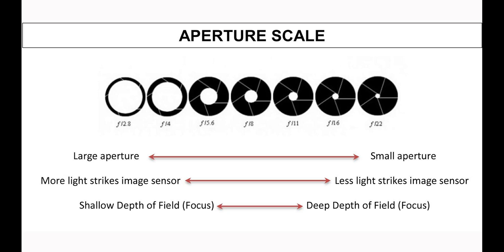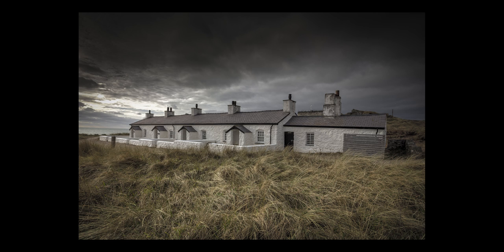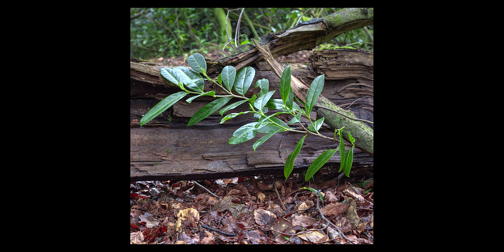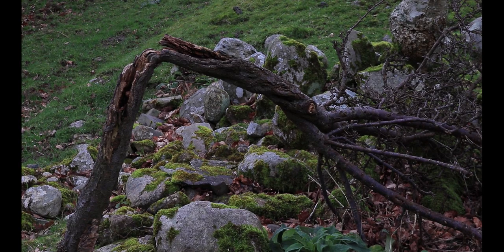F-stops determine how open the aperture is for allowing light through. The smaller the f-stop, like f1.4, means the aperture is at its widest, allowing all the light through the lens. So if we go through all the f-stops up to f22, the aperture becomes very small, like a pinhole. So you need to remember: large apertures mean small f-stop sizes. By changing the f-stop, the aperture has a direct impact on the depth of field. Shooting at f16 will bring all objects in the background and foreground into focus. Shooting at a small aperture such as f1.8 will isolate either the foreground or background.